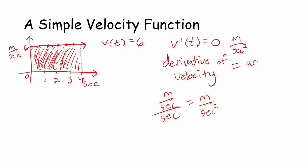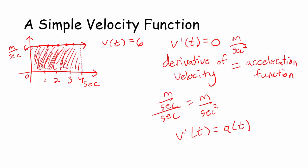So the derivative of the velocity function is really just the acceleration function. The derivative of velocity is the acceleration. So v prime of t is actually the acceleration function — it's actually a of t. The derivative of velocity tells me the instantaneous rate of change of the velocity at any given instant. How the velocity is changing per unit time — that is what acceleration is. So v prime of t, the derivative of velocity, is acceleration.